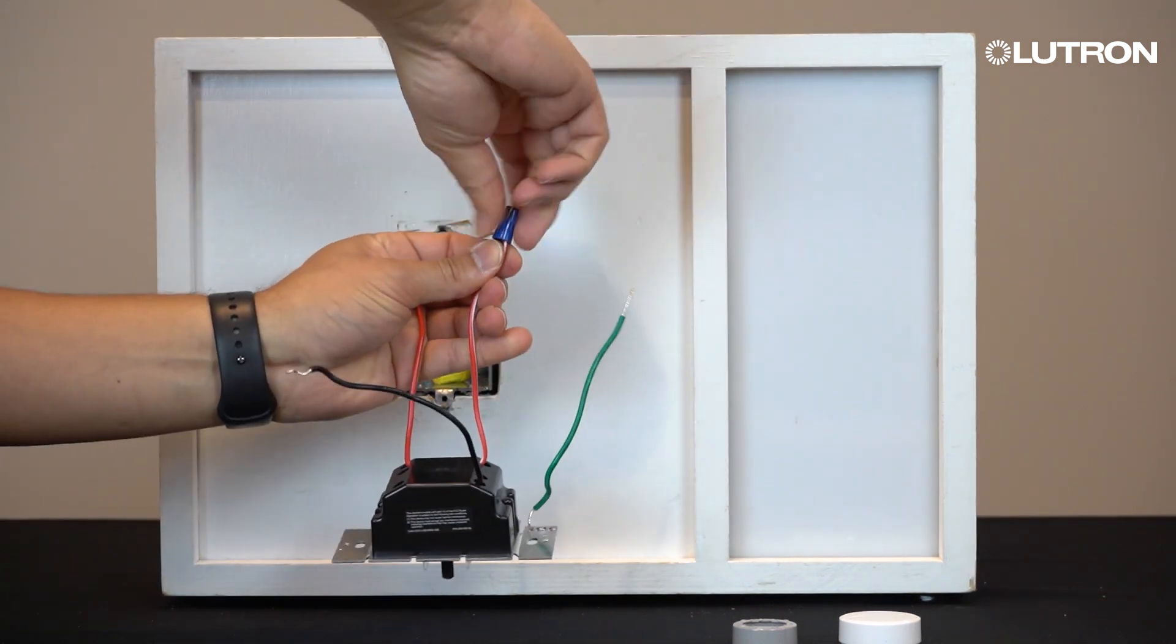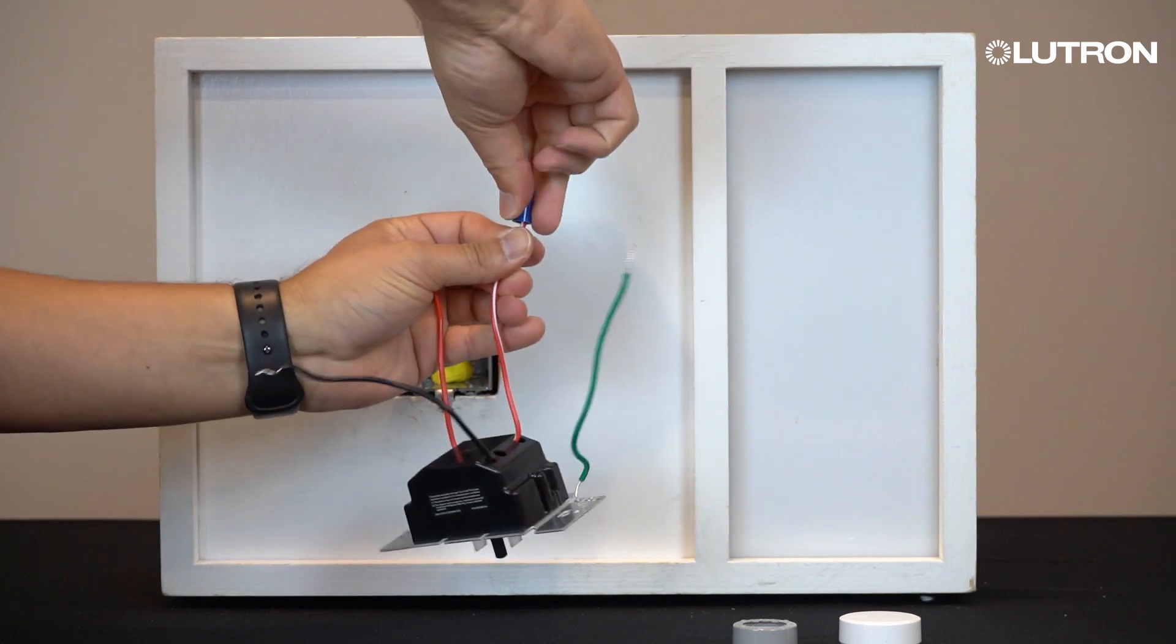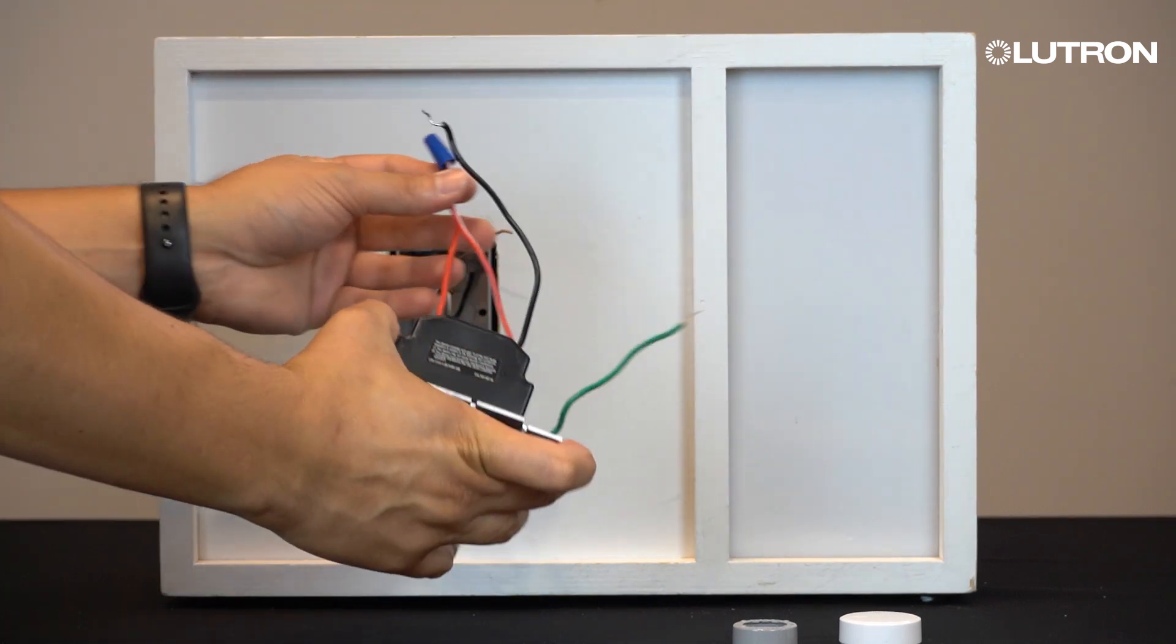On the new dimmer, cap off the red and white wire with the blue wire nut that is provided in the packaging. This wire is not required for a single-pole application.